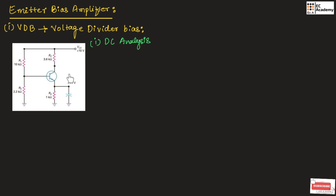This figure shows a voltage divider bias circuit with biasing voltage of 10 volts. RC is 3.6 kilo ohm, RE is 1 kilo ohm, R1 is 10 kilo ohm, and R2 is 2.2 kilo ohm.